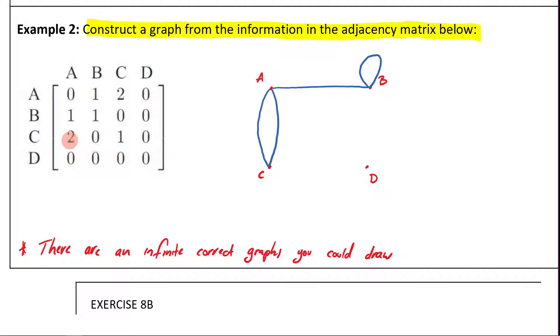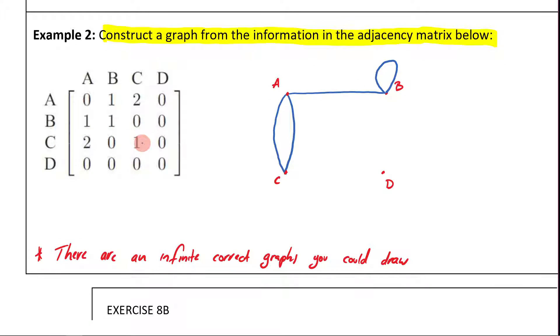C is connected to A through two ways. We've already got that. C is not connected to B. Fantastic. C is connected to C. So that means C has to have a loop with itself. We'll do that. And then C is connected to nothing else. And D is connected to nothing at all. D is an isolated point. And that's because we've got all zeros there.